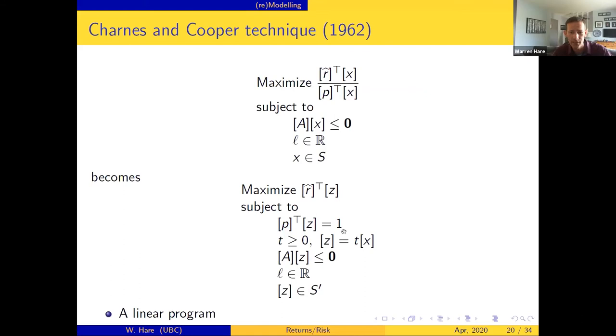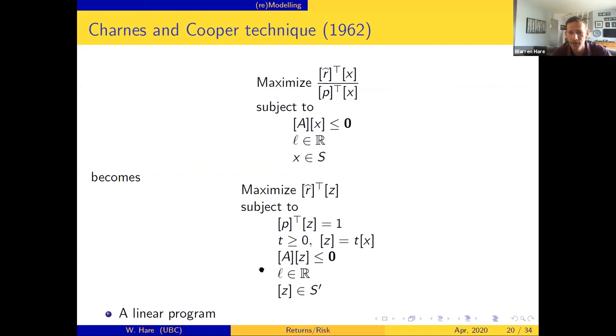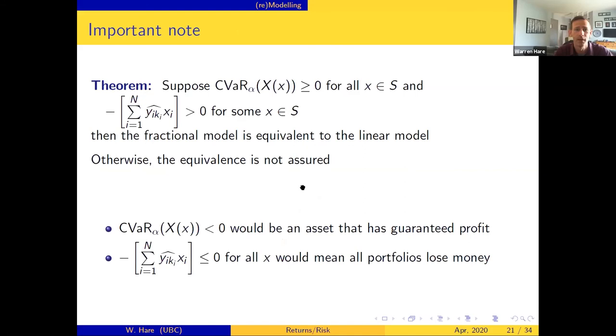Now there's a catch right here - I've got this t greater than or equal to zero assumption. If t becomes negative then we end up with some bad stuff happening because we've done a lot of divisions and multiplications and I've got inequality signs floating around. But in the case of returns over risk you can dig down and say what does that mean. So t greater than or equal to zero means that your conditional value at risk must be greater than or equal to zero for all x, and there has to be at least one portfolio where this sum, this negative yi xi, is greater than zero.